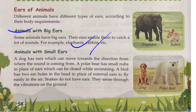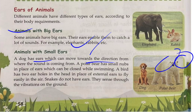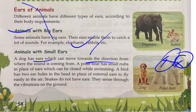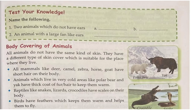Animals with small ears: a dog has ears that can move toward the direction from where sound is coming. A polar bear has small nubs in place of ears, which can be closed while swimming. A bird has two ear holes in its head in place of external ears, which helps it fly easily in the air. Snakes do not have ears — they sense through vibrations on the ground.